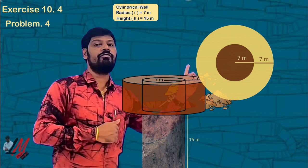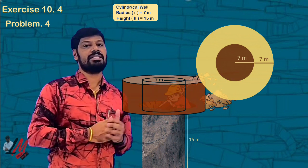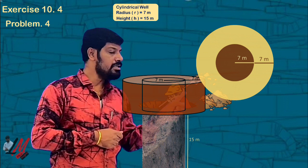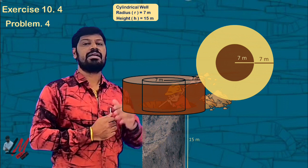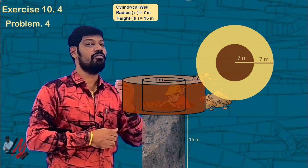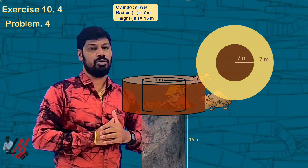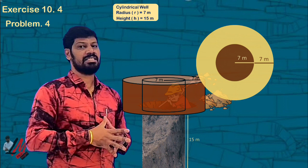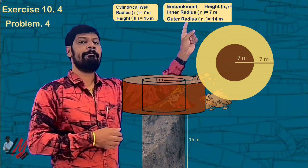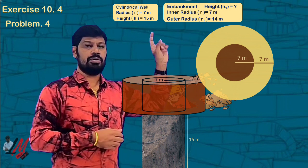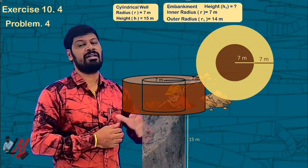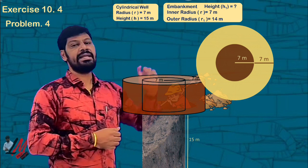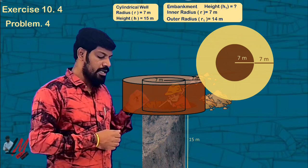The radius is 7 meters. That's fine. Width is 7 meters. That means the outer circle radius is 14 meters. This is a little bit of a difference. You can see that the embankment is here.